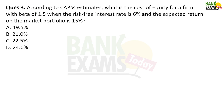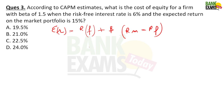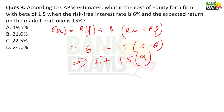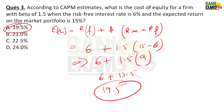Numerical 2: According to CAPM, what is the cost of equity for a firm? Beta is 1.5, risk-free interest rate is 6%, and market portfolio return is 15%. Using ER = RF + B(RM − RF): ER = 6 + 1.5 × (15 − 6) = 6 + 1.5 × 9 = 6 + 13.5 = 19.5%. The correct answer is 19.5%.